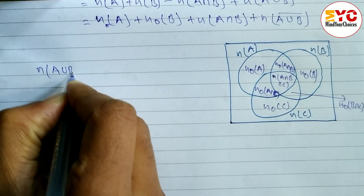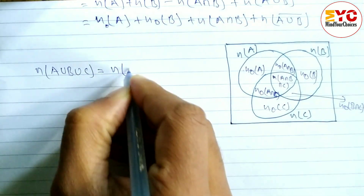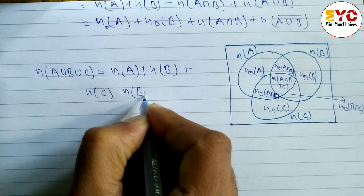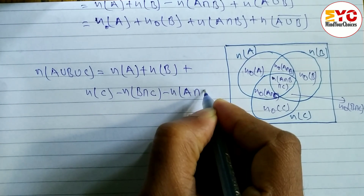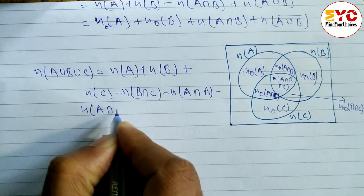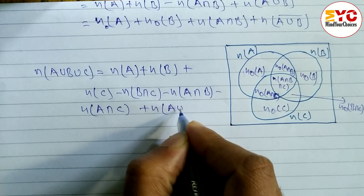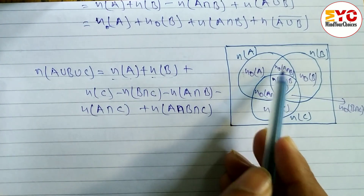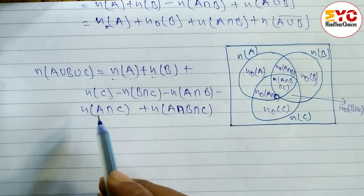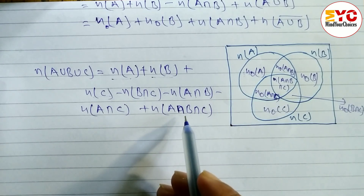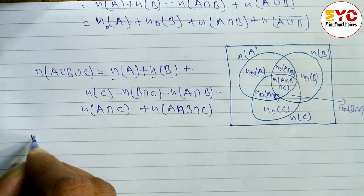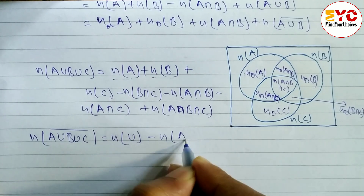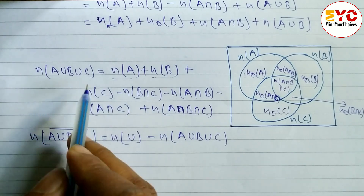The formula for n(A union B union C) is: n(A) + n(B) + n(C) minus n(B intersection C) minus n(A intersection B) minus n(A intersection C) plus n(A intersection B intersection C). So you add the individual sets, subtract the pairwise intersections, and add back the triple intersection. For the complement: n(A union B union C) complement = n(U) minus n(A union B union C).